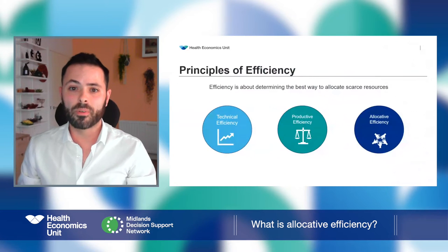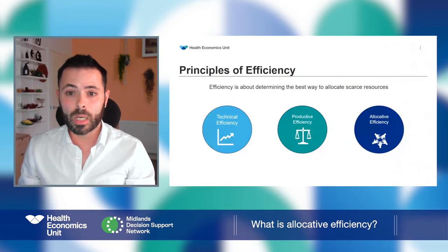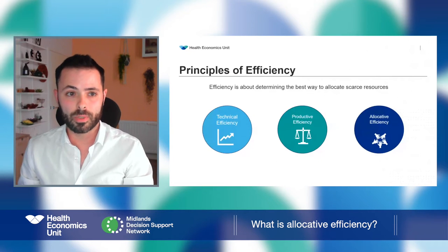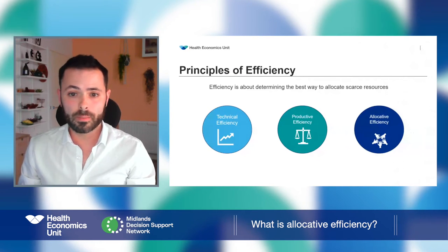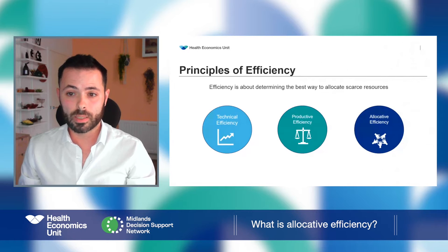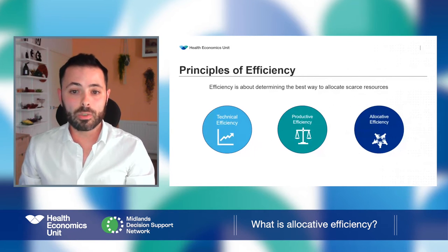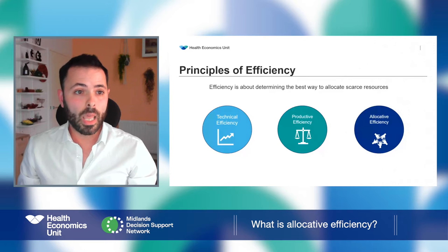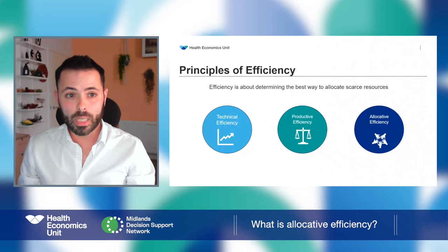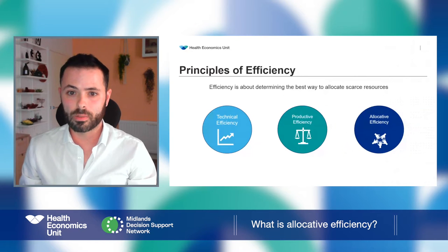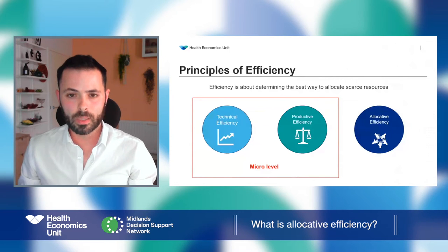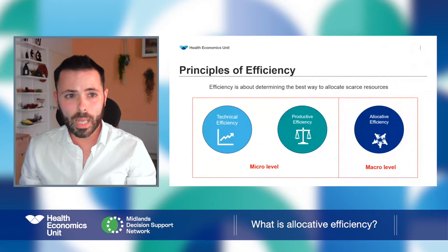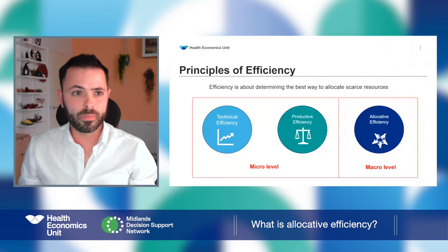We will be analysing principles of efficiency. Efficiency is about determining the best way to allocate our scarce resources. There are three different concepts that can be used in different circumstances. On the left, technical efficiency; productive efficiency in the centre; and finishing with allocative efficiency on the right. Technical efficiency and productive efficiency are more micro concepts, whereas allocative efficiency can be considered a macro level concept.